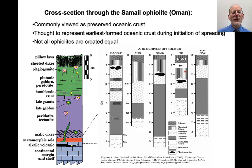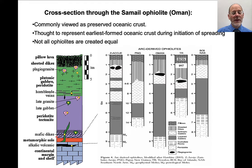These are commonly viewed as preserved oceanic crust. Here is a schematic cross-section of what an ophiolite looks like. From bottom to top, there would be sediments, pillow lavas, sheeted dikes, plutonic rocks, gabbros, and then ultramafic rocks. They are thrust onto continental margins and so they have a shear zone underneath them. The shear zone is often high temperature and metamorphoses the rocks underneath — it's called the metamorphic sole.